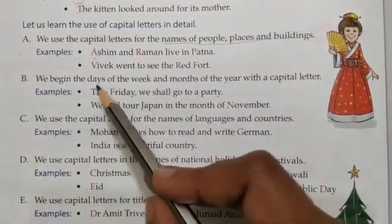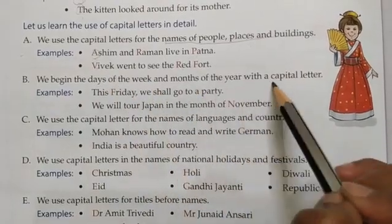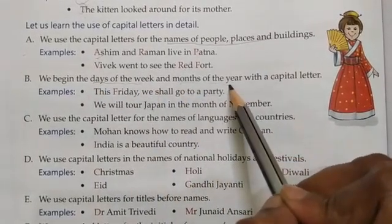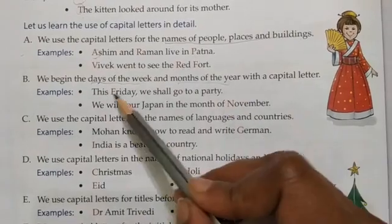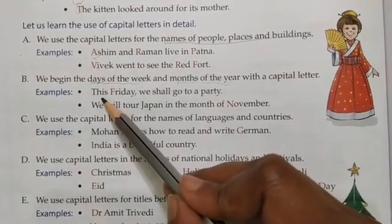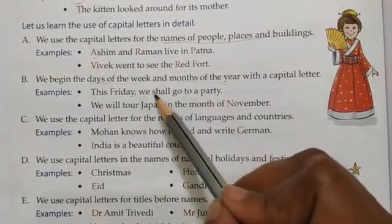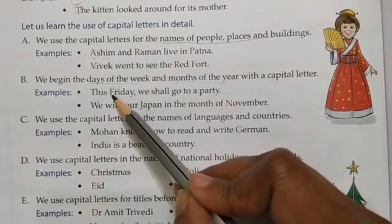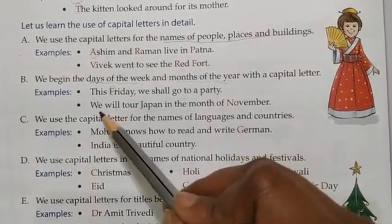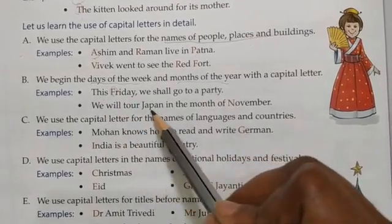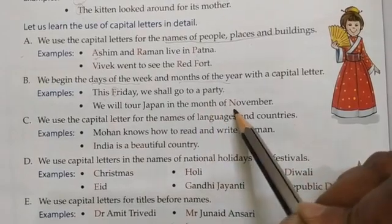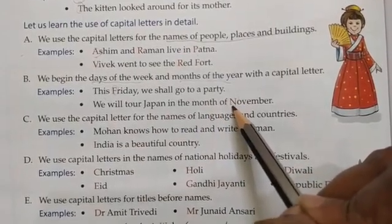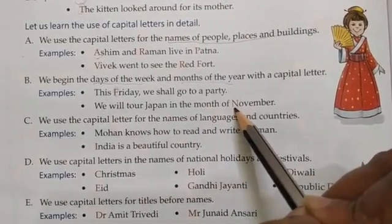We begin the days of the week and months of the year with capital letters. For example, 'This Friday we shall go to a party' — Friday is a day, so F is capital. 'We will tour Japan in the month of November' — N is capital because we are talking about a month of the year.